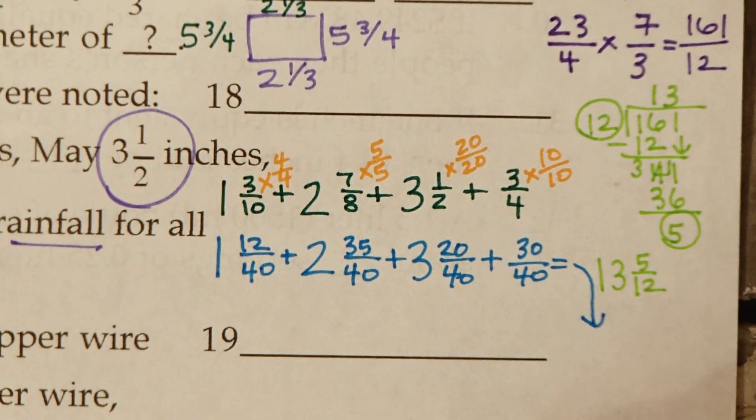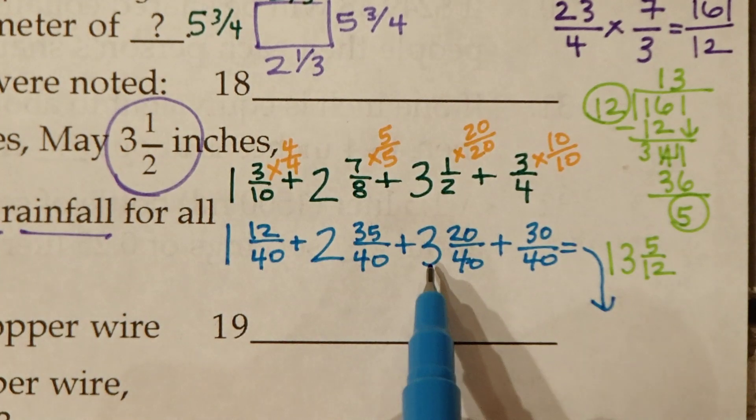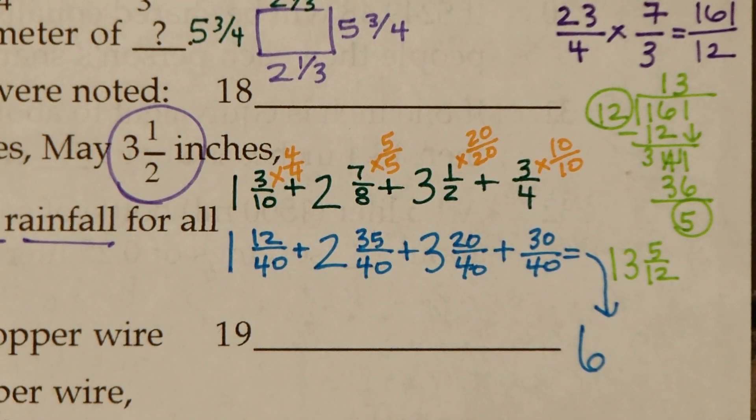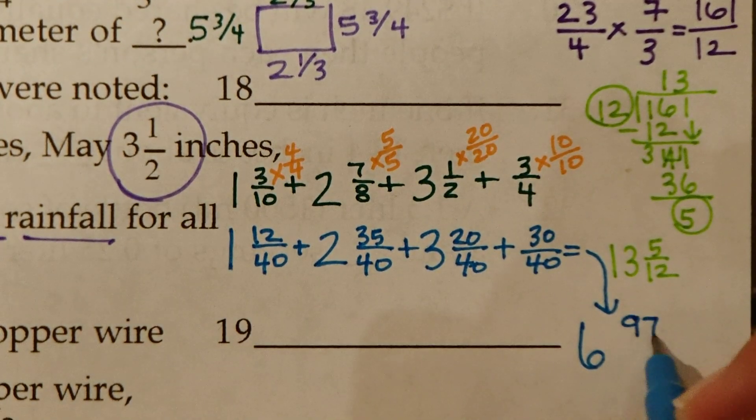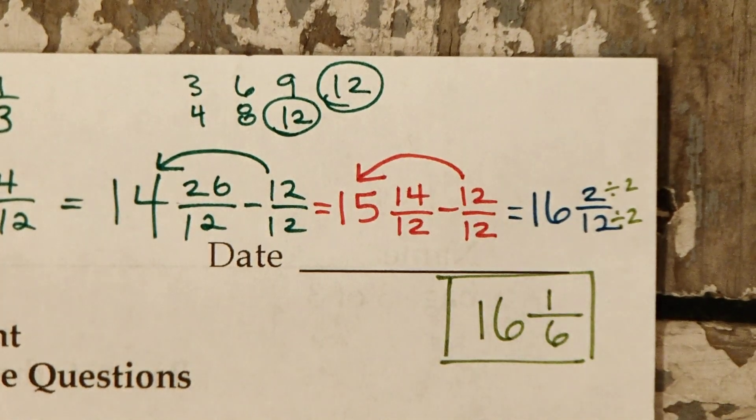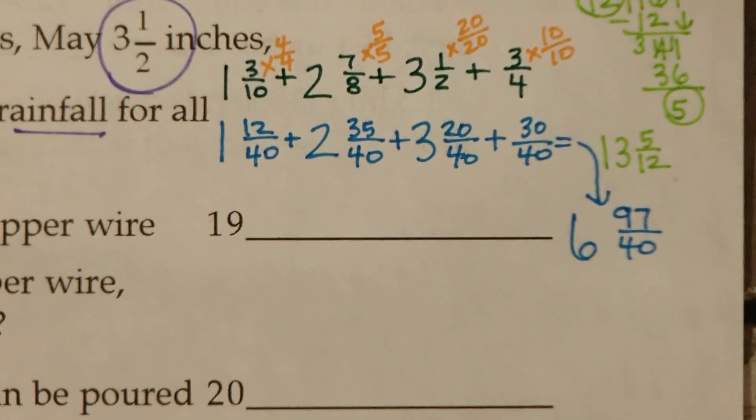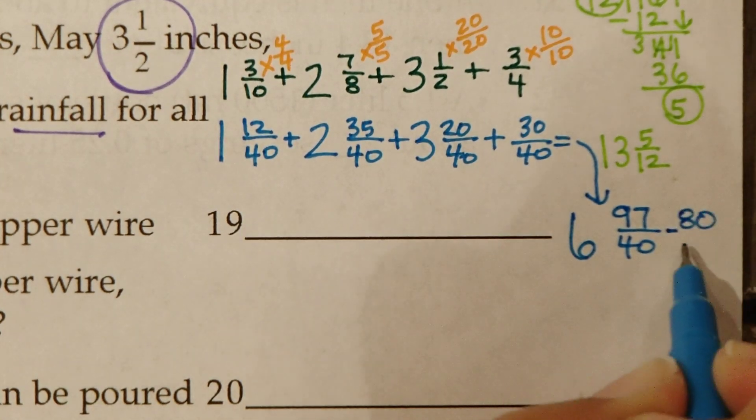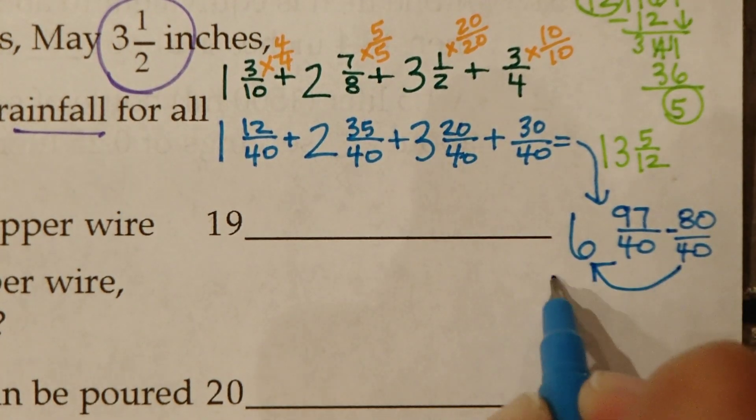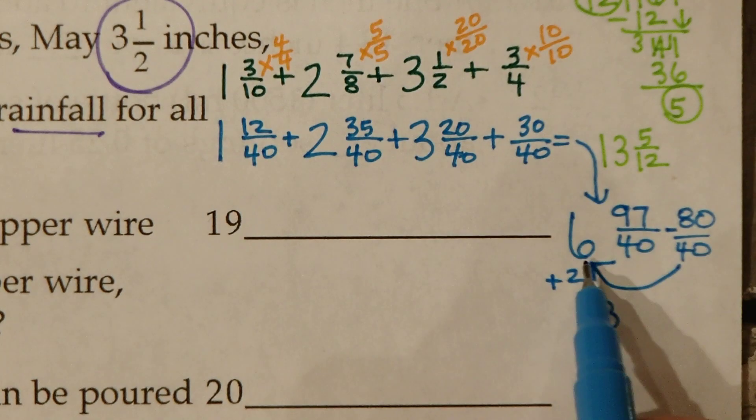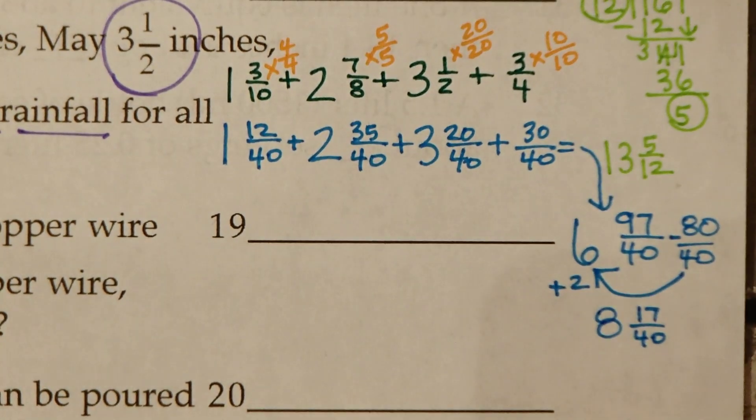1 plus 2 is 3, 3 plus 3 is 6. Then we've got 12 plus 35 plus 20 plus 30, that's 97 over 40. How many 40s can we take out of 97? I'm thinking 2 because that's 80. We can take out 80 40ths, that's two holes. Plus 2, so the answer is 8. Now 97 minus 80 leaves 17 out of 40. Our final answer for number 18 is 8 and 17 40ths.